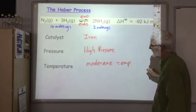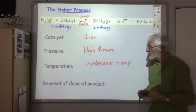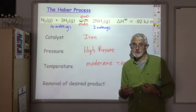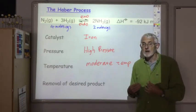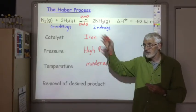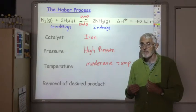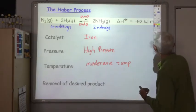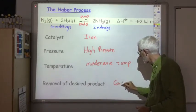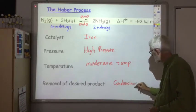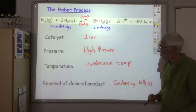And finally, in order to push the reaction to the right, we try to remove the ammonia as it's been produced. And we can do this by cooling it down to minus 35 degrees, which liquefies the ammonia, but not the reactants. So we can continuously remove NH3 by condensing and that shifts the equilibrium to the right. So we condense the NH3 into a liquid NH3.